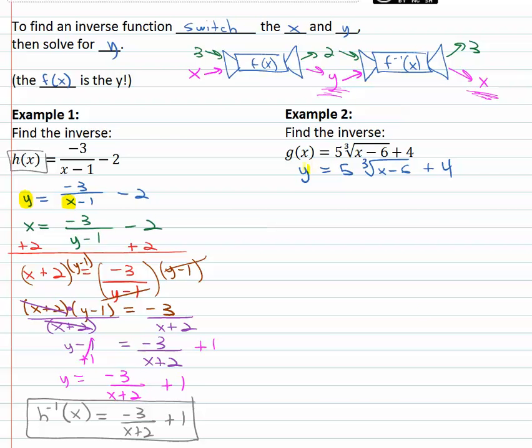And to find the inverse, we're going to switch the order that x and y work in the function machine. y becomes x equals 5 times the cube root of x becomes y minus 6 plus 4. And then we start solving for y.